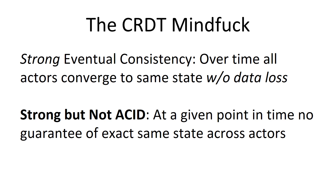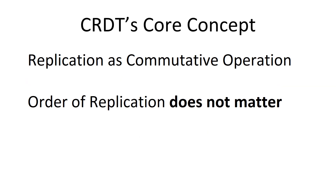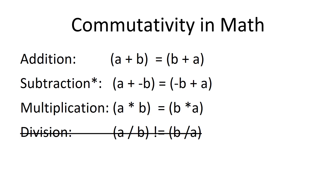At any given point in time there's no guarantee that everyone will have the same data, but they're going to converge to the same data and they're not going to lose any data during this convergence. The way they do this is by using commutative operations for replication, and commutative operations are cool because you're not too worried about order of replication. Here are some examples of math.